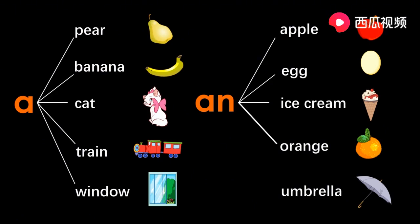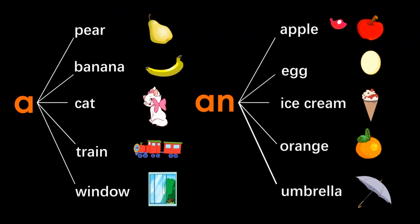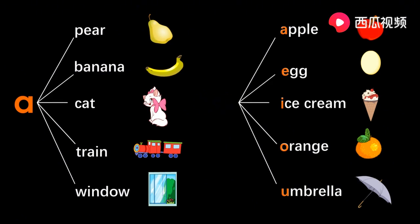An orange 一个橙子. An umbrella 一把雨伞. 在以 A E I O U 开头的单词前，用 an，表达一个的意思，其他的都用 A。